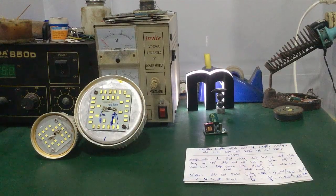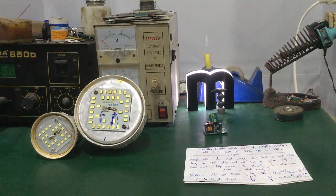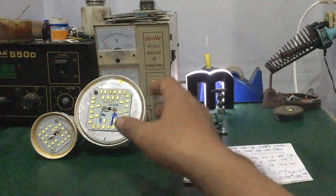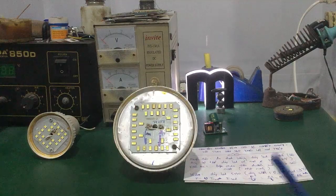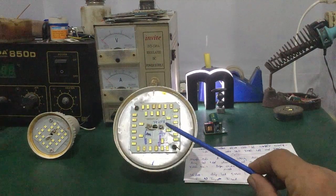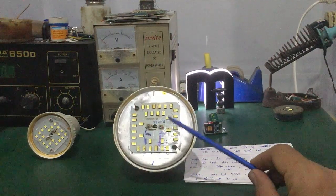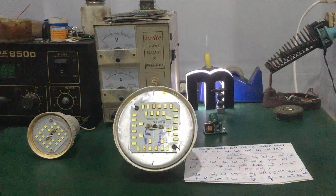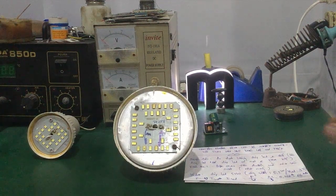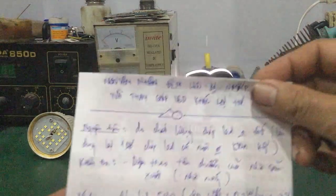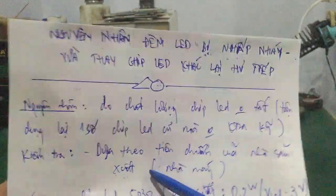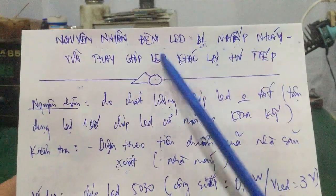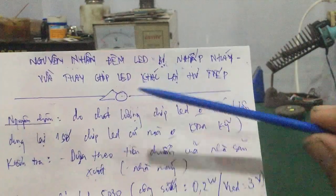Chào các bạn. Trong video này một số bạn có hỏi mình cái nguyên nhân tại sao mà đèn led bị nhấp nháy, và những trường hợp mà các bạn thay con chip led khác khi mà cái đèn led này bị cháy. Các bạn mới vừa thay những cái chip led hư bằng chip led khác, thì xài một lúc đó lại tiếp tục bị cháy chip led bị đứt. Mình nói trước tiên đây là do cái chất lượng của chip led. Mình nói về cái đèn led nhấp nháy trước.